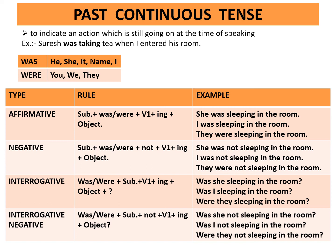Negative rule: subject plus was or were plus not plus first form of the verb plus ing plus object. Example: She was not sleeping in the room. I was not sleeping in the room. They were not sleeping in the room. Interrogative rule: was or were plus subject plus first form of the verb plus ing plus object plus question mark. Example: Was she sleeping in the room? Was I sleeping in the room? Were they sleeping in the room?